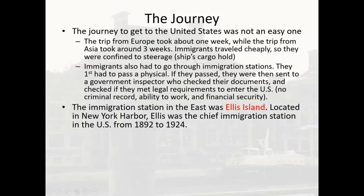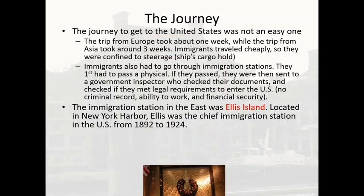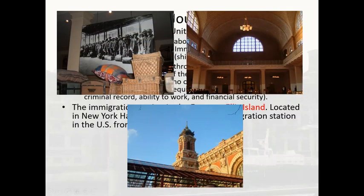Ellis Island was the chief immigration station in the U.S. from 1892 to 1924, located in New York Harbor. Here are some more pictures of Ellis Island: the reception hall where immigrants would come, the museum's displays of different pictures, samples of the types of luggage immigrants would carry, and the immigrant tower on Ellis Island.